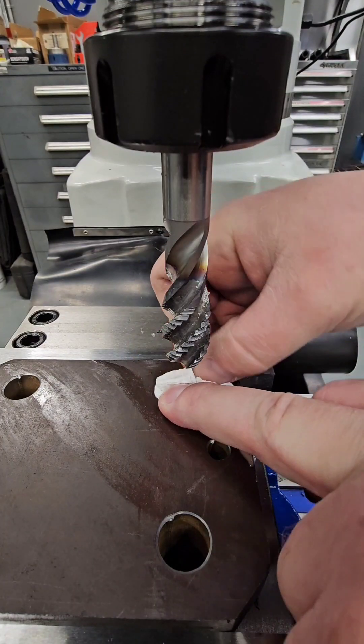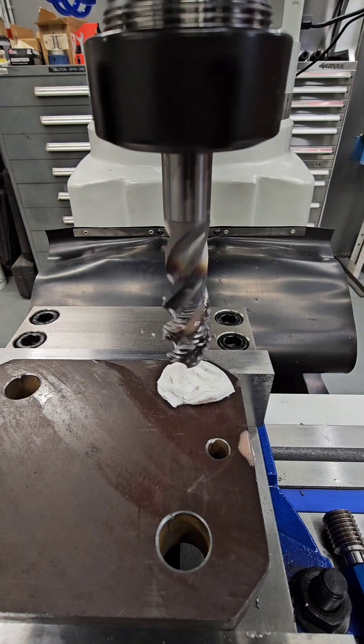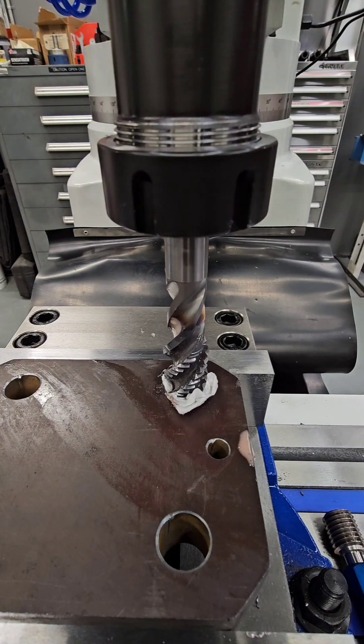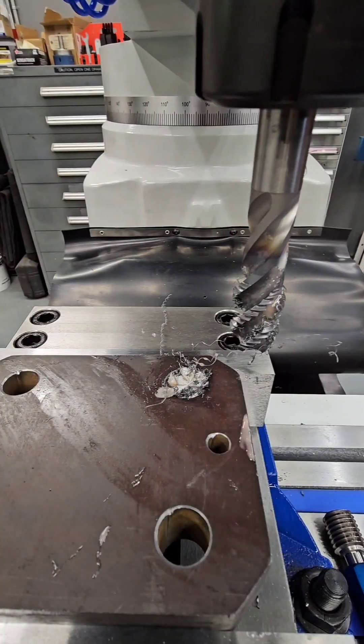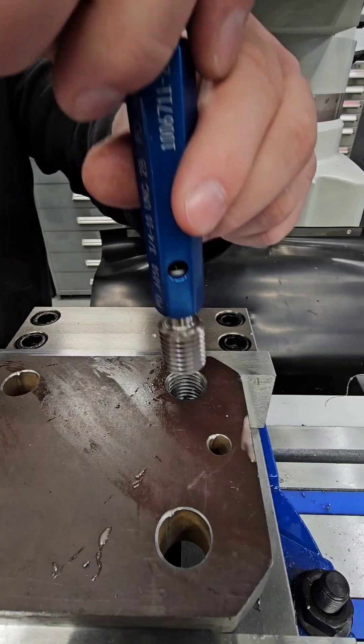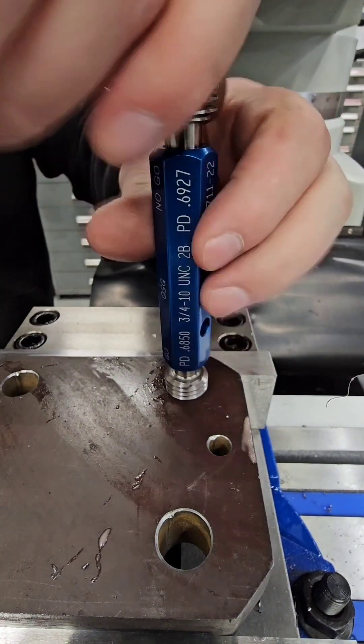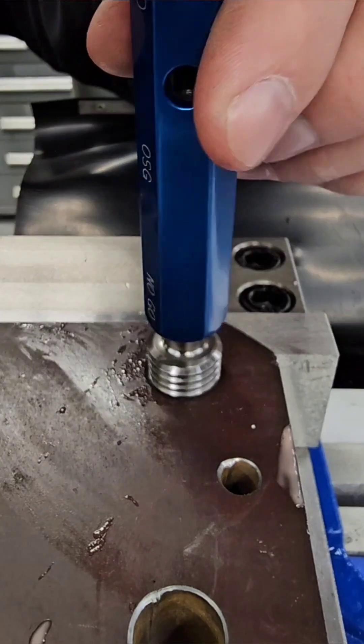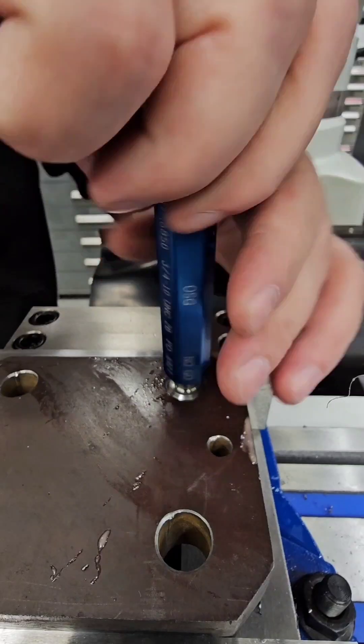Here's a machinist trick you probably haven't seen before. I'm going to use a paper towel to make the tap cut oversize. This can be useful if the part's going to be heat treated or plated. Taps can be purchased with different H limits to control this more precisely but that wouldn't make nearly as interesting of a video.